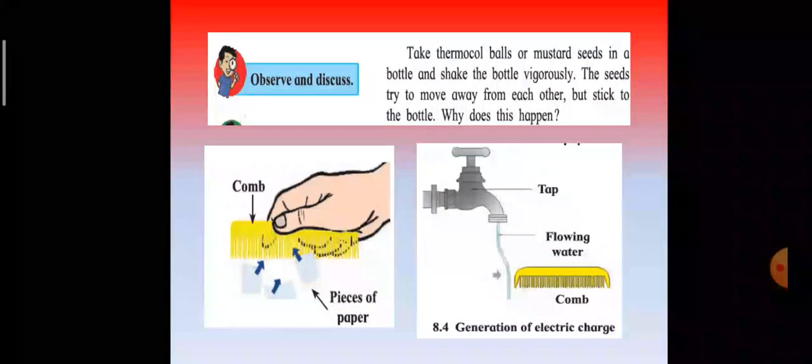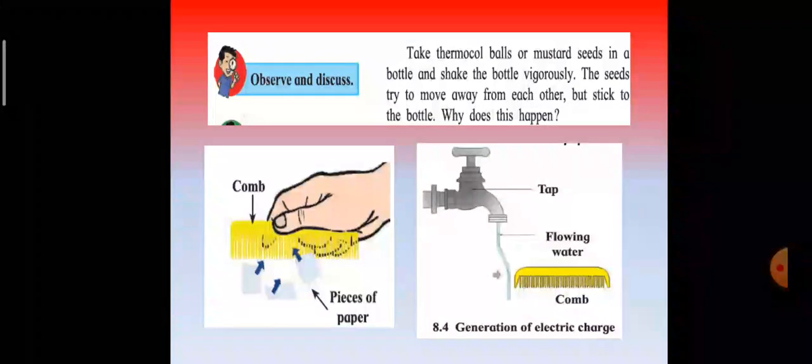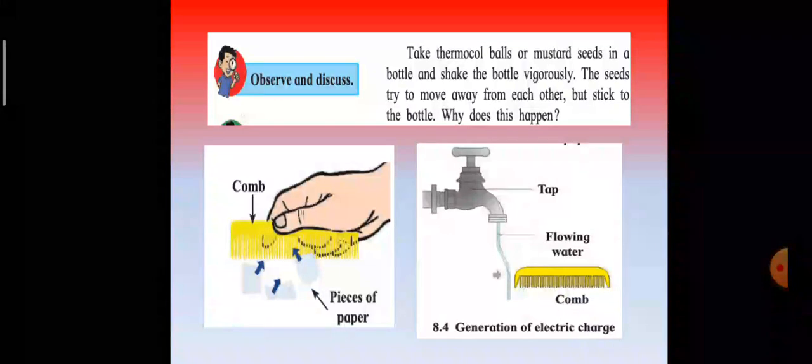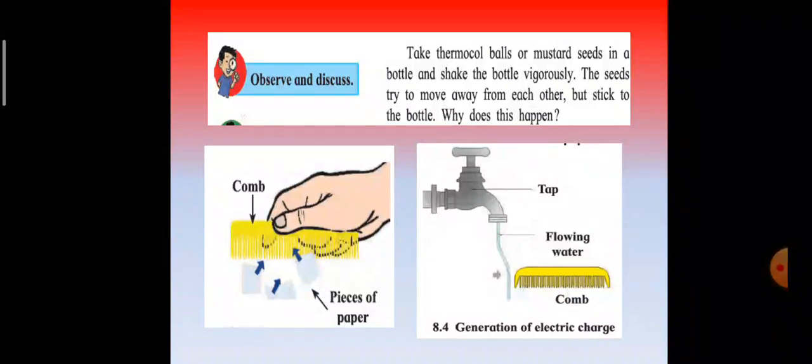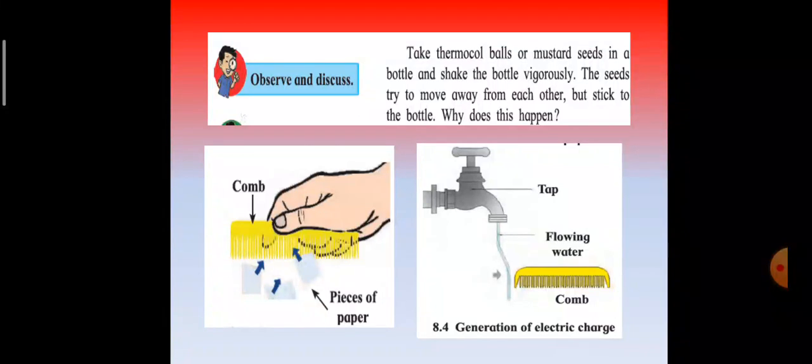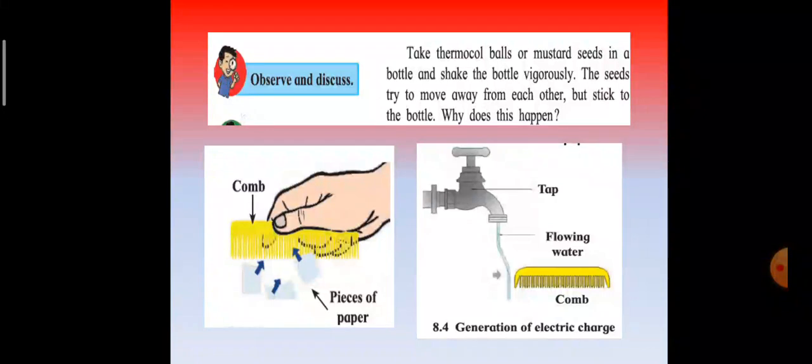the negative particles nearest the comb are pushed away. That part becomes positively charged due to a deficiency of negative charge. The comb has negative and the water has positive charge. Due to the attraction between these opposite charges, the flowing water is attracted towards the comb.